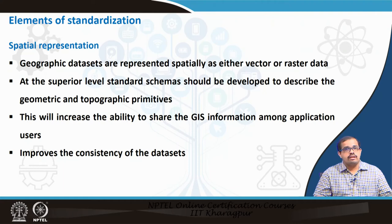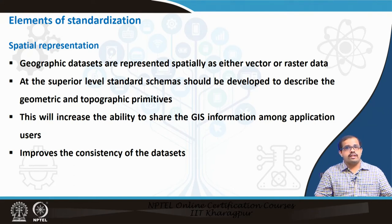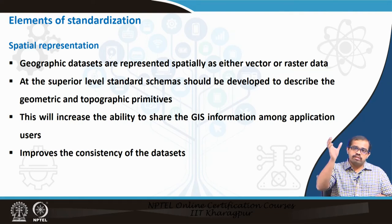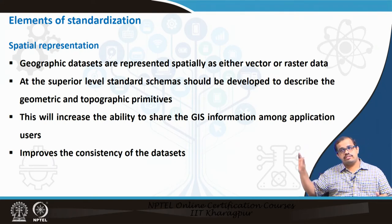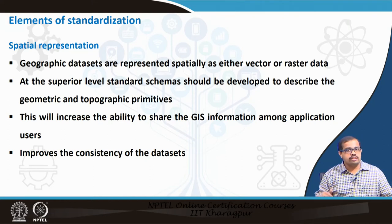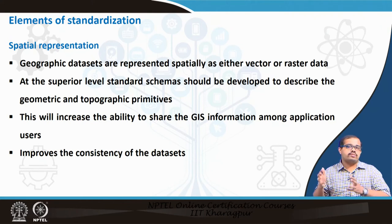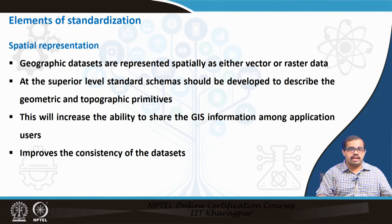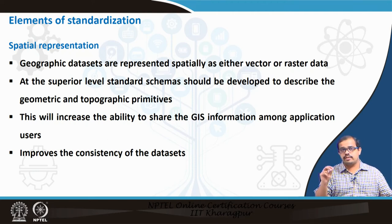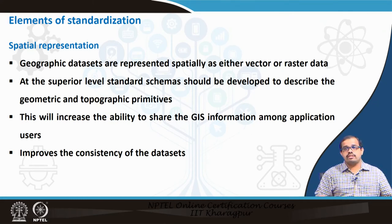For spatial representation, whenever you are looking at geographic datasets, they are represented spatially either in a vector data model or in a raster data model. In a raster data model you have pixels stored as rows and columns, whereas in vector data it is point, line, and polygon. At a superior level of standard, each schema should be developed to describe the geometric and topographic primitives accurately. This helps develop the best ability to share GIS information among most application users and most importantly improves the consistency of datasets.